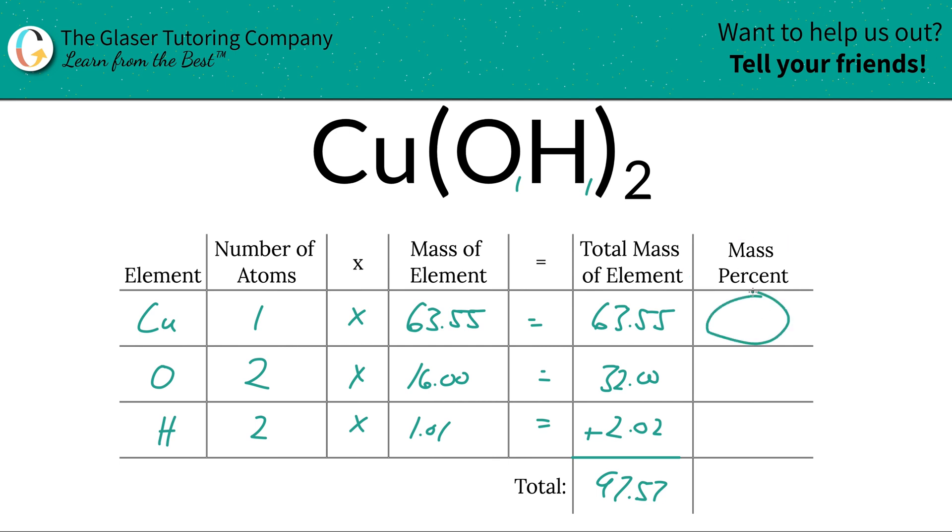So to find the mass percent of copper here, we're going to take the total mass of the copper divided by the total mass of the compound. So now all you need to do is look at this column. So it's going to be 63.55 divided by 97.57. Take that value and multiply it by 100, and that's going to be the percent of copper. So that's going to work out to be roughly 65.13%, and that's the percentage of copper in copper 2 hydroxide.